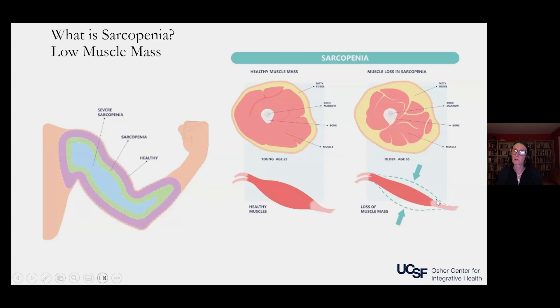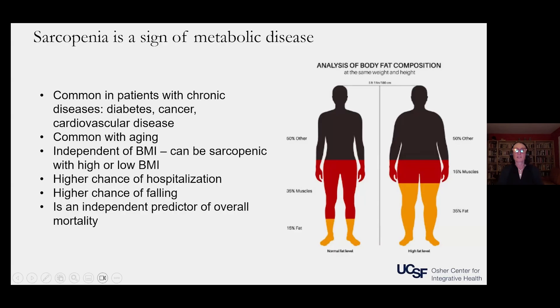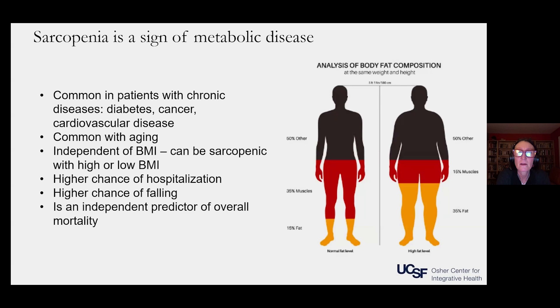You can see that the sarcopenic muscle is much smaller than a normal-sized muscle. Sarcopenia is a sign of metabolic dysfunction and metabolic disease. It's common in patients with chronic diseases like diabetes, cancer, and cardiovascular disease. It's common with aging — somebody who's 95 is going to be more sarcopenic than somebody who's 25. And interestingly, it's independent of your body mass index, so you can be heavy and be sarcopenic, but you can also be skinny and be sarcopenic.